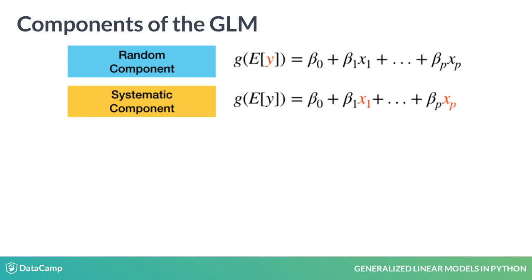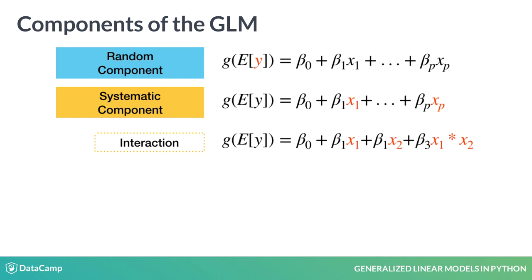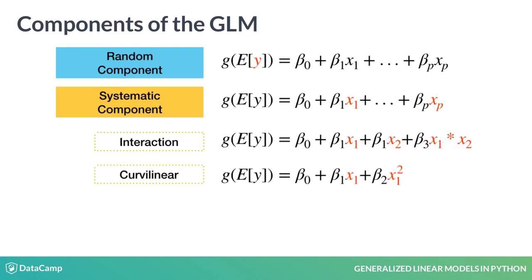The second component is the systematic component, which defines which explanatory variables to include in the model. We can include p different explanatory variables. Note that it allows for interaction effects, where one variable depends on another and vice versa. Note that the right-hand side represents a linear combination of the explanatory variables.